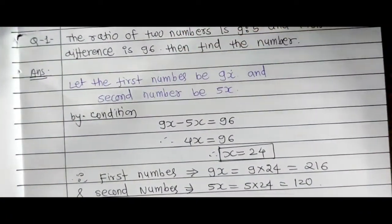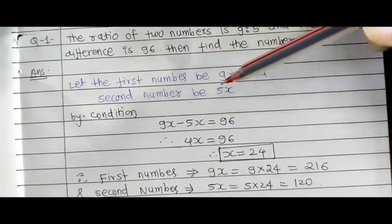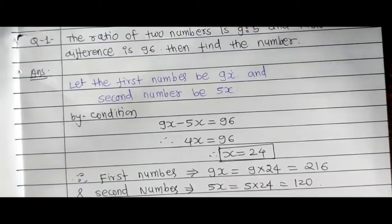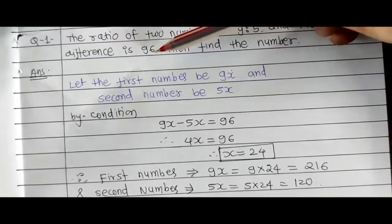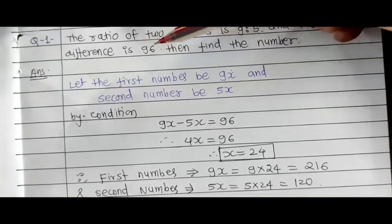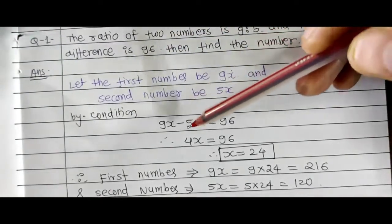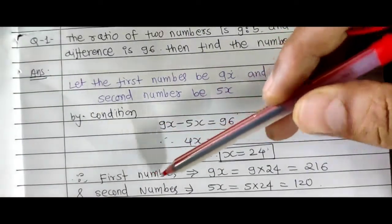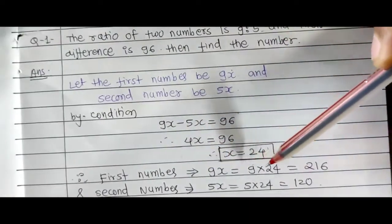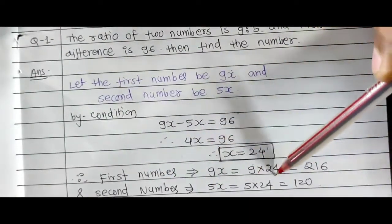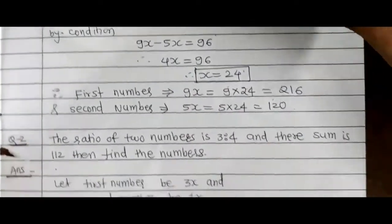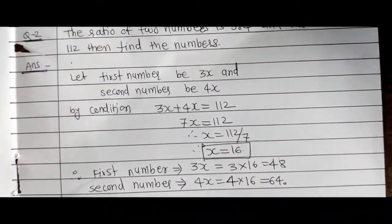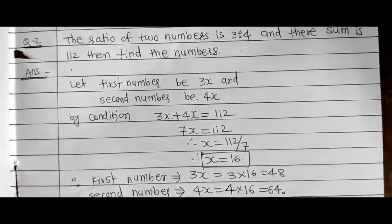Main first number likhta hoon 9x, kyunki iska ratio 9 is to 5 hai, isliye x as a constant use kar raha hoon. And second number 5x. By the given condition, their difference is 96, so 9x minus 5x equals 96, therefore x equals 24. First number is 9x = 9 into 24 = 216, and second number is 5x = 5 into 24 = 120.